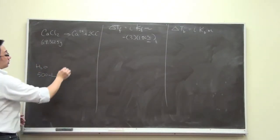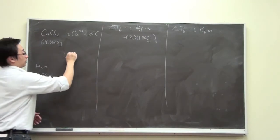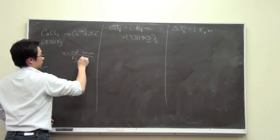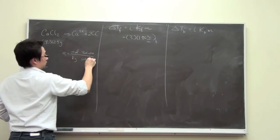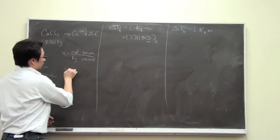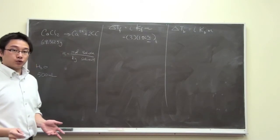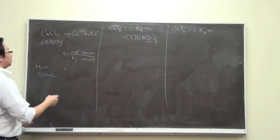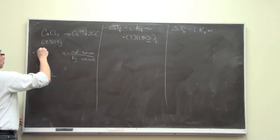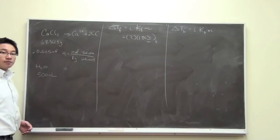So we are going to calculate molality here. So again, moles of solute over kilograms of solvent. And we have to find out the moles of solute. So you can calculate on your own. And you will find out that the number of moles of calcium chloride is 0.625 moles from this mass.